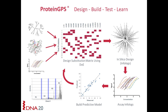We use that particular information to build a machine learning model that identifies the correlation between the variables — being amino acid substitutions — and then the output property that we're trying to change: K-cat, K-m, K-stability, or whatever it is. This is subsequently iterated through four rounds.